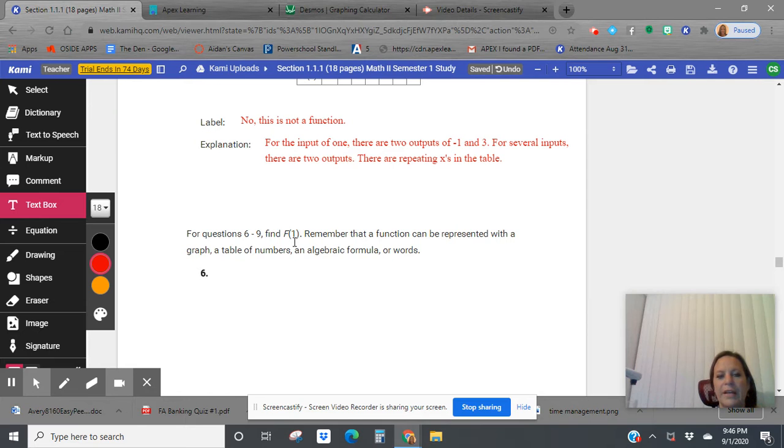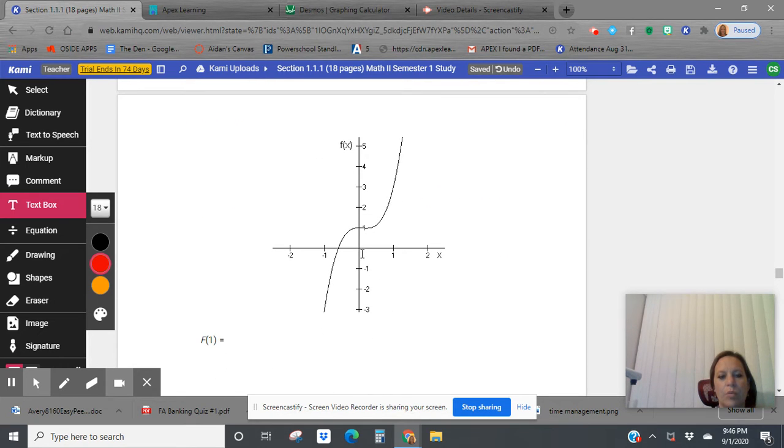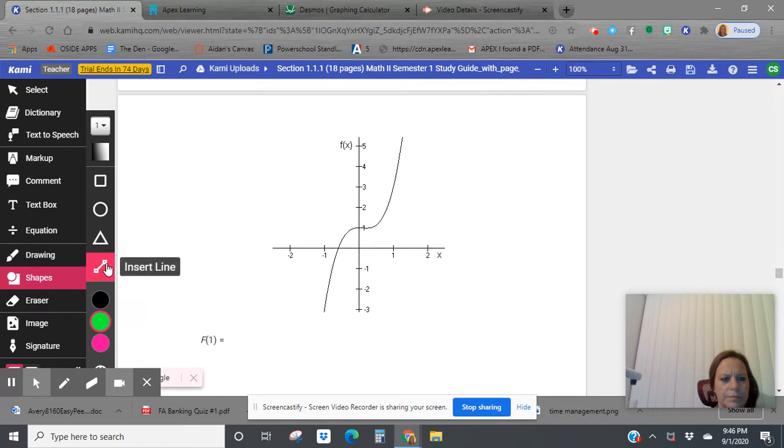For questions six to nine, find f of one. Remember that a function can be represented with a graph, a table of numbers, or a formula, or words. So f of one, we're going to go out to one on the x. And we're going to follow it up to the function here. If I follow that up, just to see where it touches. I'm getting that f of one equals three.